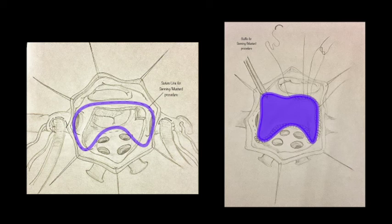In the classic atrial switch operation, Senning utilized autologous atrial tissue for all the steps of the venous reconstruction. In situations where the autologous tissue is not sufficient to provide an unobstructed venous baffle, Mustard proposed his modifications using autologous pericardium, which is harvested as free patches and then used to create the baffle.